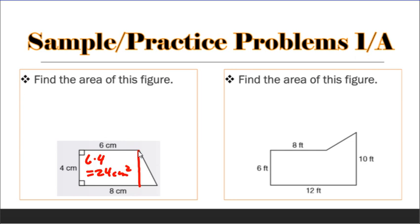And in the triangle, we know the height is 4. If this top part is 6, this has to be 2 because the whole thing is 8. So it would be 4 times 2 divided by 2. So a half of 8 is 4 square centimeters. So I'm going to take my 24 plus my 4. That would give me an area of 28 square centimeters.